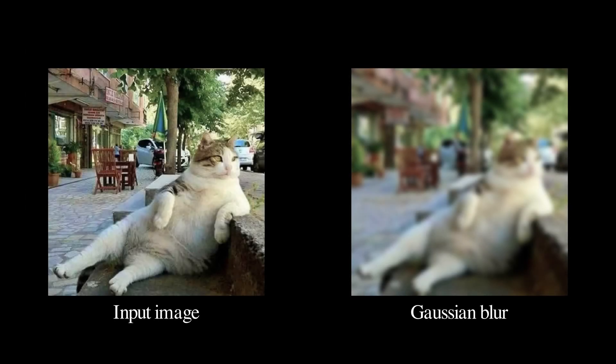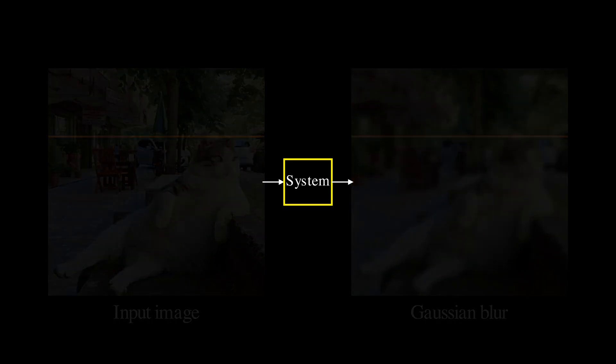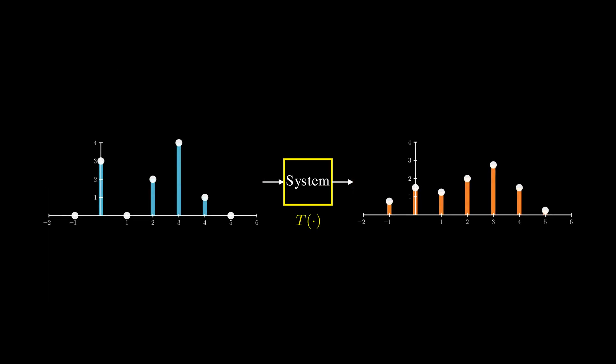The input image is a signal, and blurring is a system that processes the signal to produce an output. To build intuition, let's simplify things with a 1D example. Think of it like a scan line in an image. Here we have an input signal f, the system as a function T, that transforms the input signal f into the output signal g.